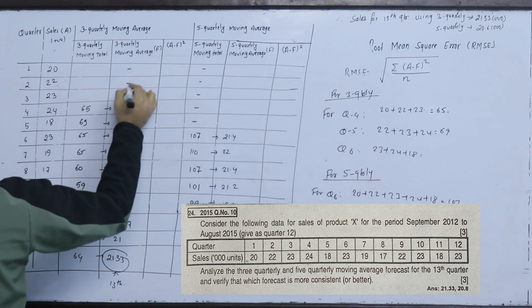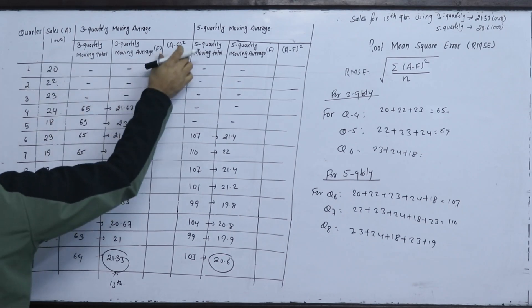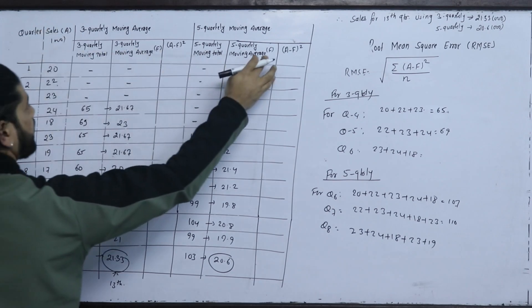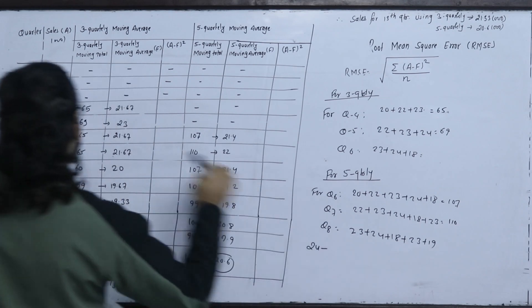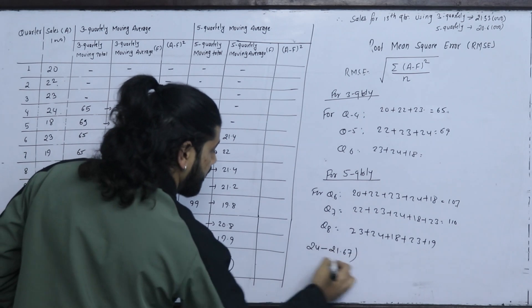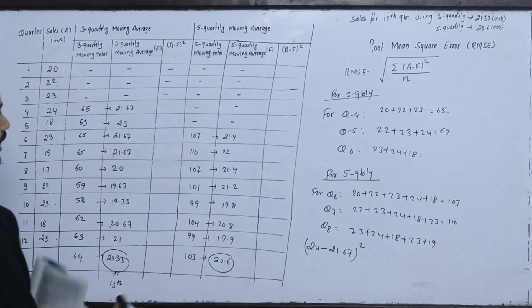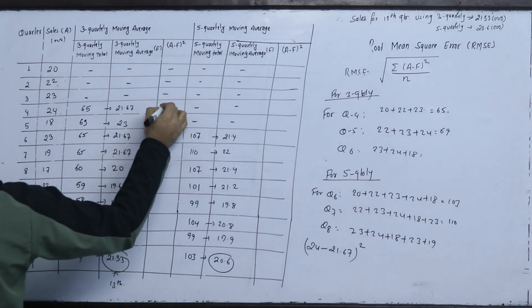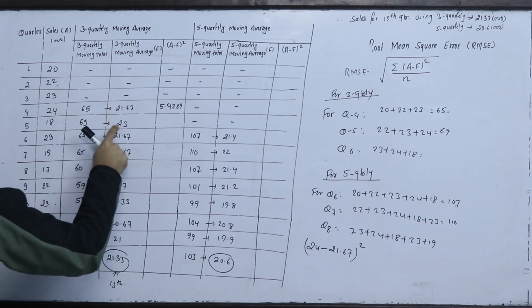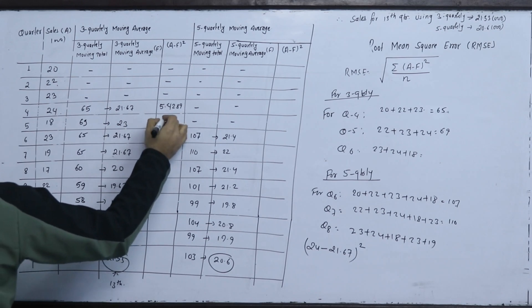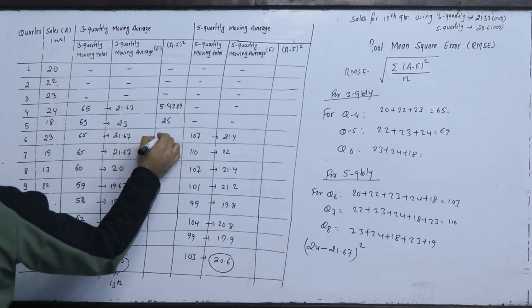Now for the consistency test using RMSE (A minus F squared): For the 3-quarterly method, 24 minus 21.67 equals 2.33; squared gives 5.4289. For 18 minus 23, that is minus 5 squared equals 25. For 23 minus 21.67, squared gives 1.7689.